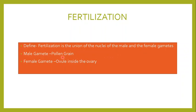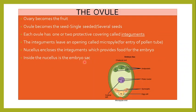The male gamete is the pollen grain, and the female gamete is the ovule, which is inside the ovary. The ovary becomes the fruit, and what is inside the ovary is the ovule. The ovule ultimately becomes the seed. So when you eat a mango, what you are eating is actually the ovary, and the seed you find inside is the ovule.